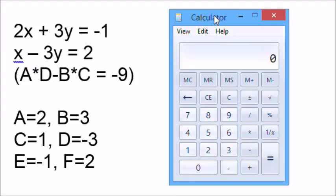Let's demonstrate solving the system 2x plus 3y equals negative 1, x minus 3y equals 2, where a is 2, b is 3, c is 1, d is negative 3, e is negative 1, and f is 2. We'll start by calculating a times d minus b times c first, because we will need to note this result down.